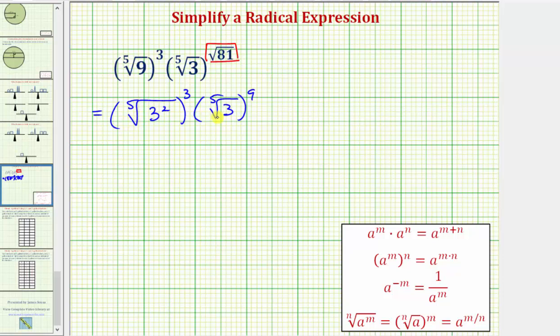Now let's write the radicals using rational exponents. For a quick review, to write radicals using rational exponents, the index tells us the denominator of the rational exponent, and the exponent tells us the numerator of the rational exponent.